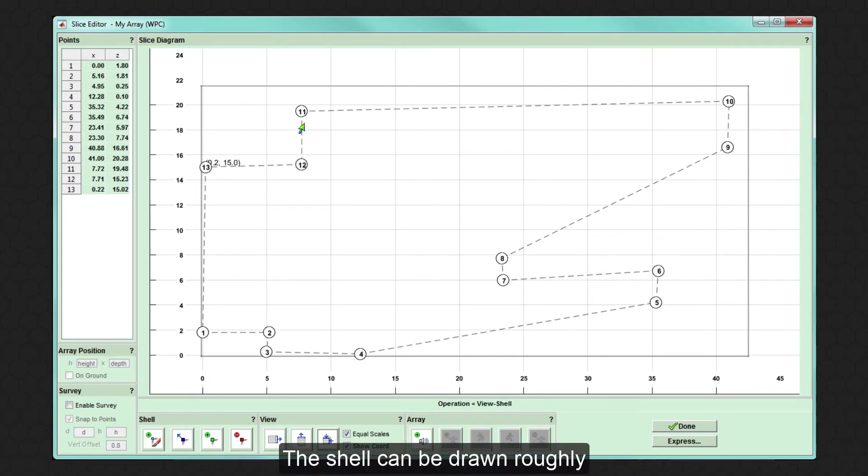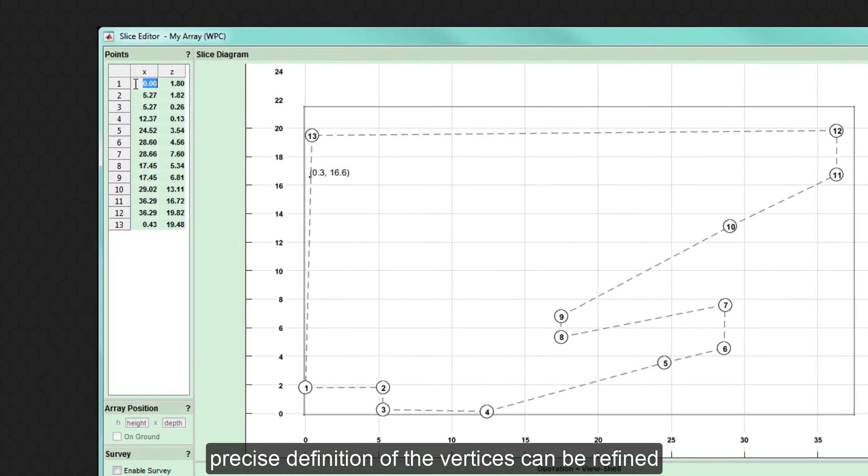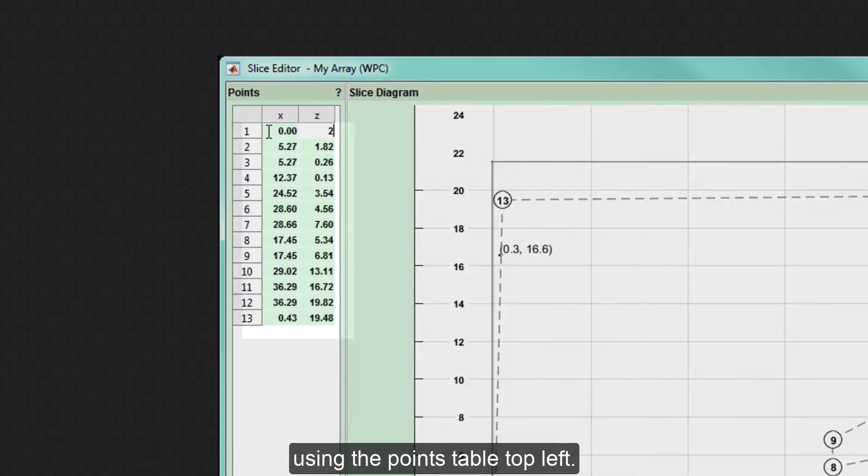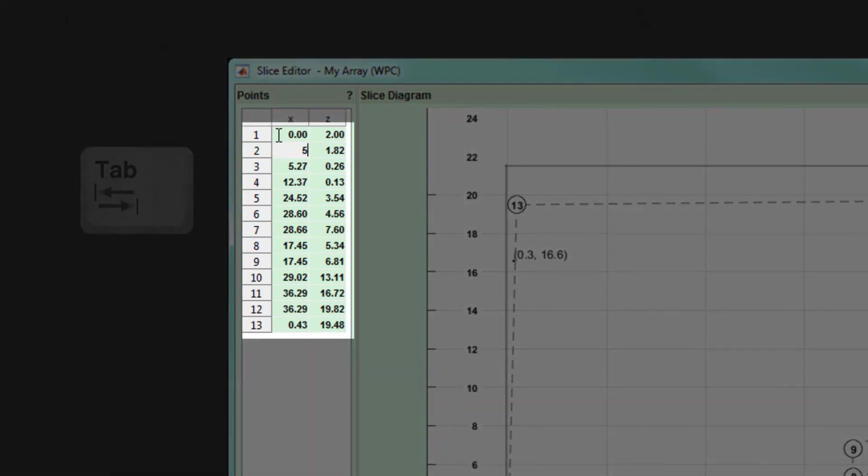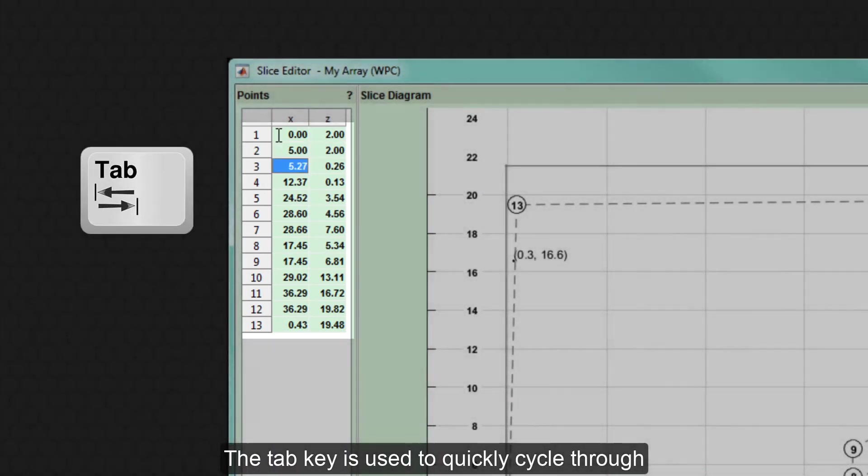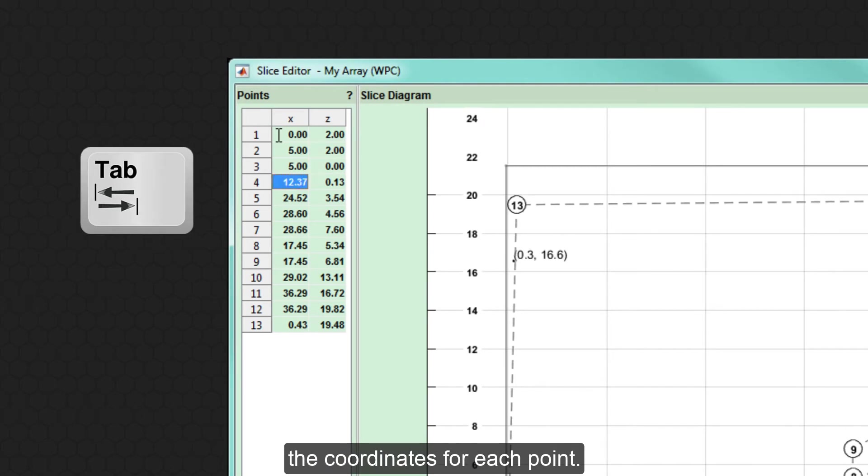The shell can be drawn roughly to speed up the process. Precise definition of the vertices can be refined using the points table top left. The tab key is used to quickly cycle through the coordinates for each point.